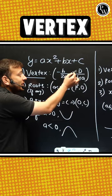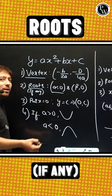Then roots, if any. If that equation have roots, the roots will become alpha comma 0, beta comma 0.